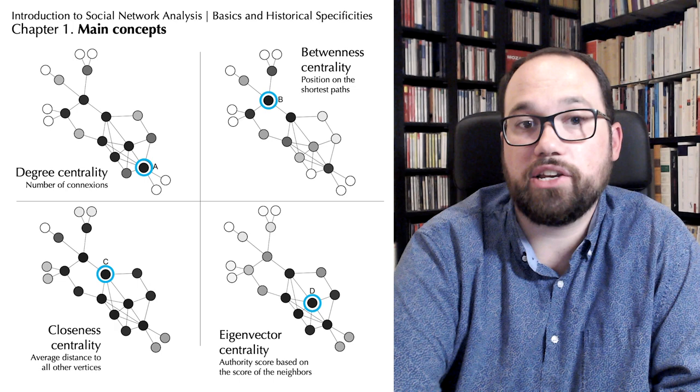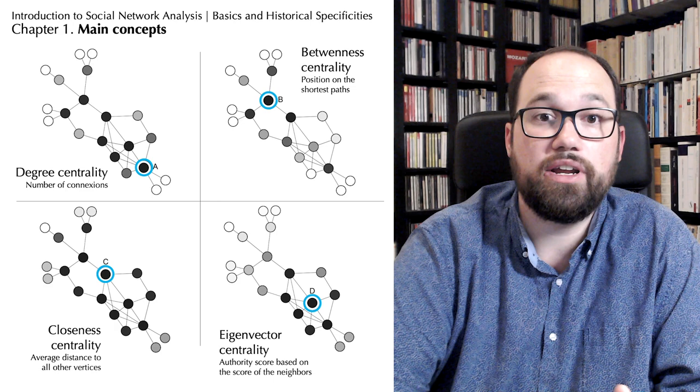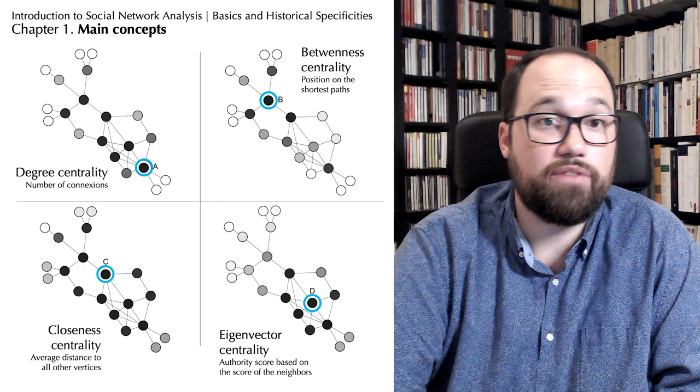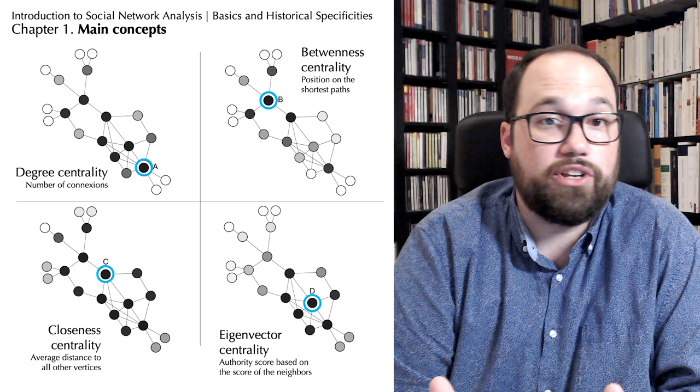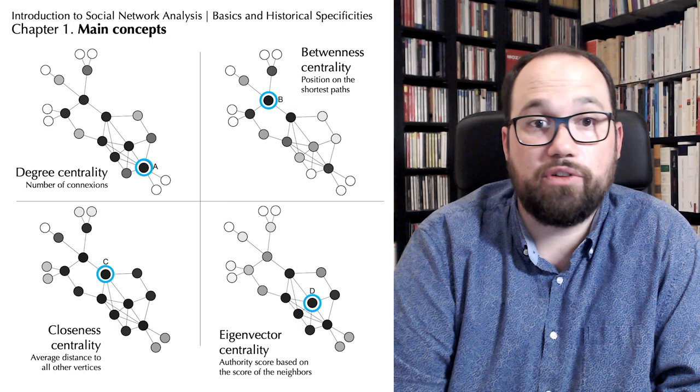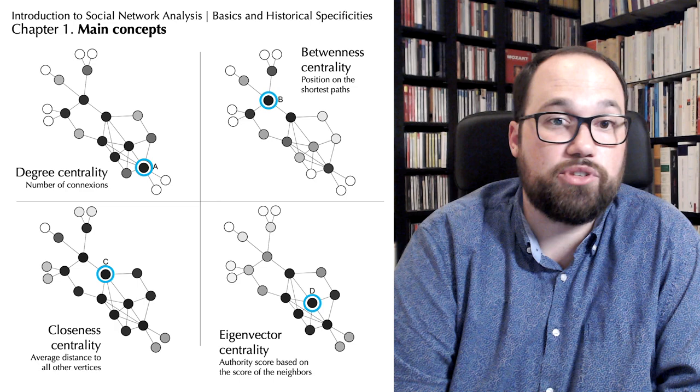At the bottom left, we find the closeness centrality. It consists in measuring how far all the vertices of the graph are from each other. The one who has the smallest average distance with all the others is therefore the one who is closest to all the others on average. Here, vertex c has the greatest mean proximity. In this conception of centrality, an individual is central if he is in the middle of the graph in terms of overall topography.